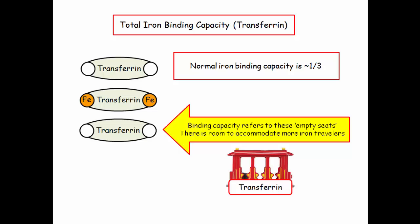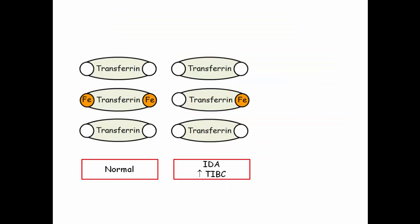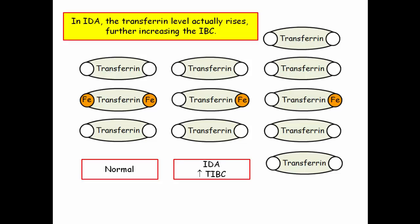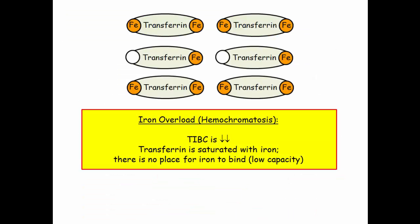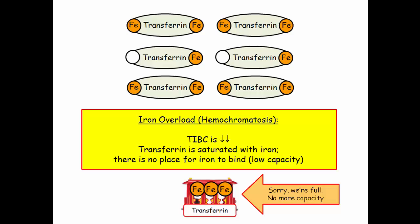A low iron binding capacity means those seats are saturated with passengers. Think about getting on the Green Line after a night at Fenway Park — the capacity is low, there are too many passengers. In iron deficiency anemia, there is less iron and therefore more capacity to bind iron, giving an elevated TIBC. What makes this even easier: in iron deficiency anemia, the body increases transferrin synthesis. So not only is the trolley empty, there is more of it. In iron deficiency anemia, you have an increased iron binding capacity. Compare and contrast that with iron overload: lots of iron bound by transferrin means the TIBC is decreased — the transferrin trolley is full.